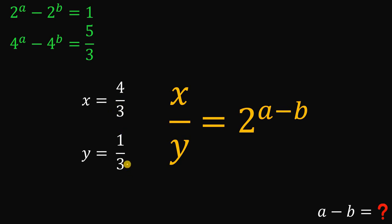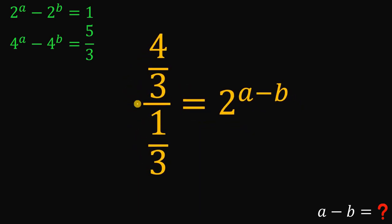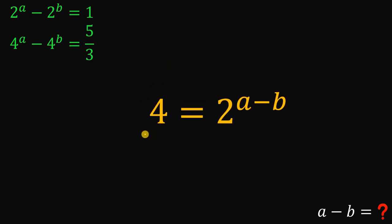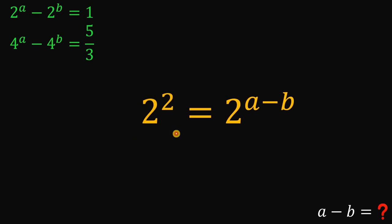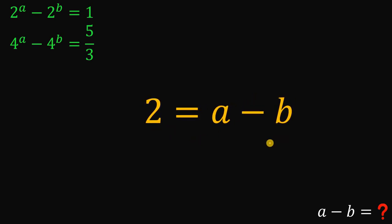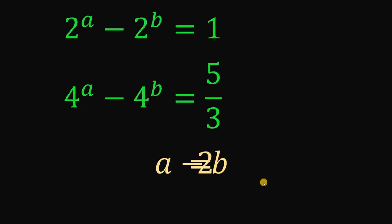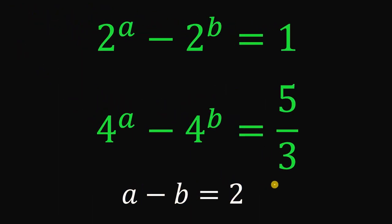We know x is 4 over 3 and y is 1 over 3. So 4 over 3 divided by 1 over 3 — the 3s cancel out — giving us 4, which is simply 2 raised to the power of 2. Now we have equal expressions with equal bases, therefore their exponents must be equal. Therefore, a minus b equals 2. That is the value of the expression we want to find. Given these two equations, the numerical value of a minus b is simply equal to 2.